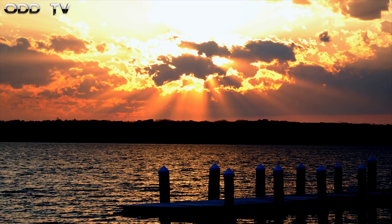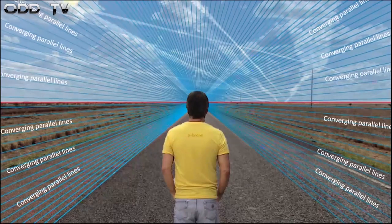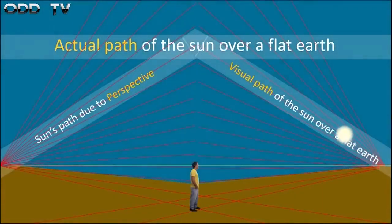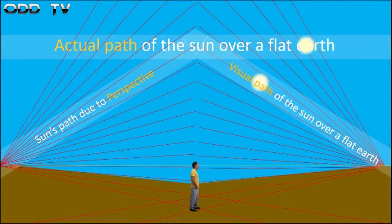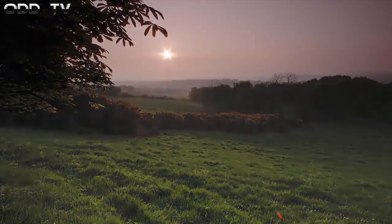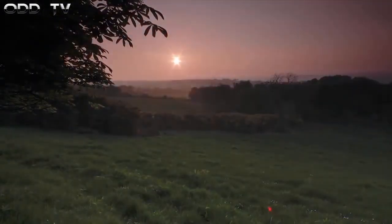Does it look like it's 93 million miles away? The answer is no. One of the things that I struggled with the most when it comes to flat Earth is why does the sun rise and set? I couldn't make any sense of it until I realized that the sun was much closer and much smaller than we are told. The sun appears to rise and set due to perspective only. What we are seeing is the actual path of the sun versus what we see because of human perspective. It's the sun as well as the moon that do the moving across the sky. The Earth is not moving whatsoever.